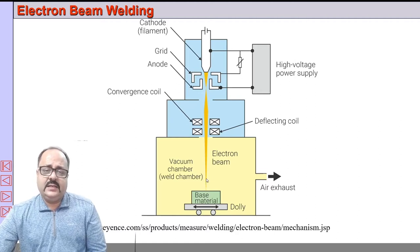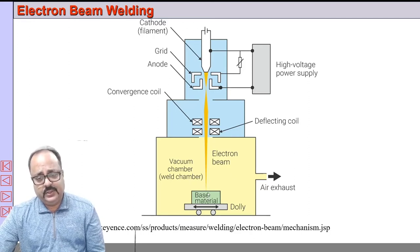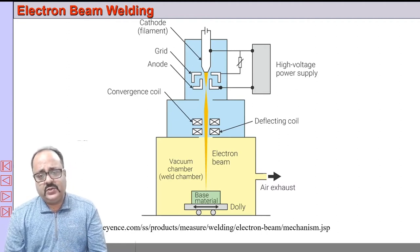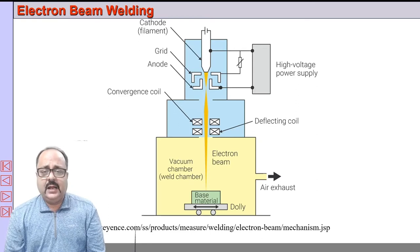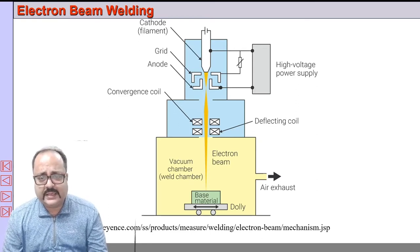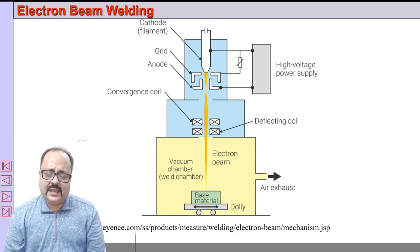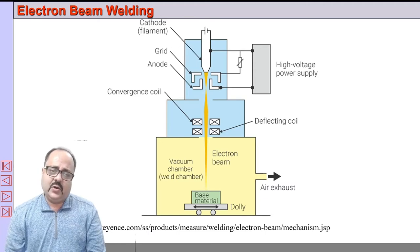When the electron beam strikes the workpiece, the kinetic energy is converted into heat energy used for melting — this is a fusion welding process where two materials form a coalescence. The result is an autogenous weld, meaning no external filler material is added. No fluxes are used. In rare cases, when welding mild steel, certain deoxidizing filler materials may be added, but normally no filler materials are used, so it is essentially an autogenous weld.